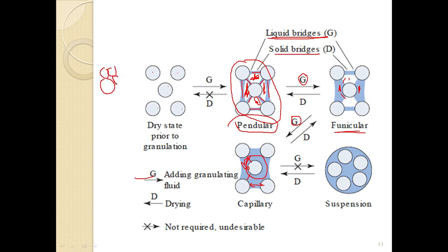After funicular state, adding a little more granulating fluid causes all the air between the particles to get displaced. The interparticulate distance goes on decreasing and a granule is formed — that state is called the capillary state. We must stop adding granulating fluid at this point. If we continue adding more, the powder converts into a suspension — the granulating fluid exceeds the powder and forms a suspension.